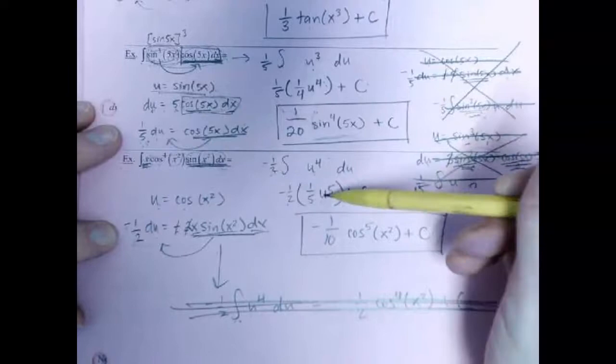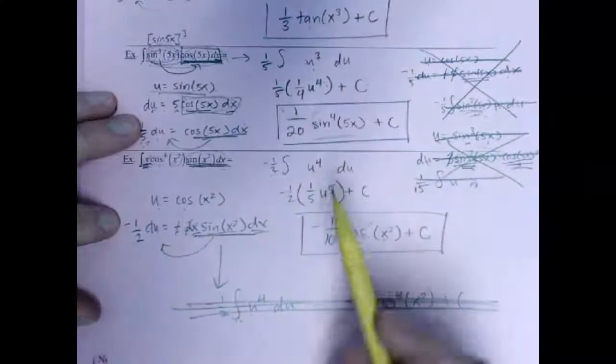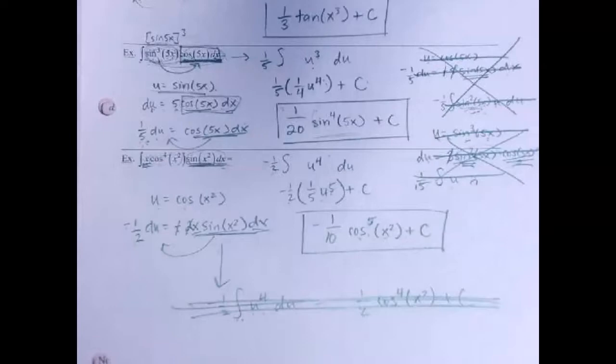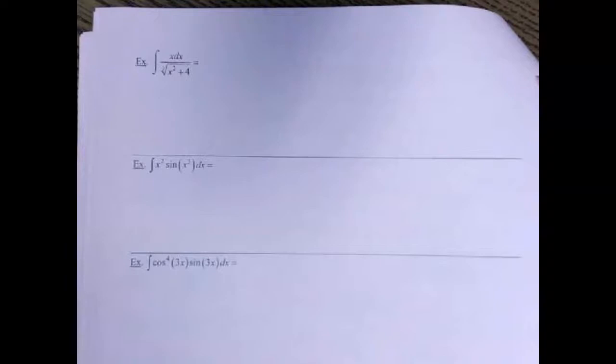Then at the end, collect all the coefficients together, make sure you put the plus c, and make sure you reverse substitute back to x's. If you have u to the fifth, when you switch your u back make sure that thing is getting raised to the fifth. Lots of opportunities to make a mistake — please just be careful. I try to emulate a good process for you to follow. There are other ways to do u-substitution, but I find the way I teach it, students generally find it the most acceptable, the least terrible.